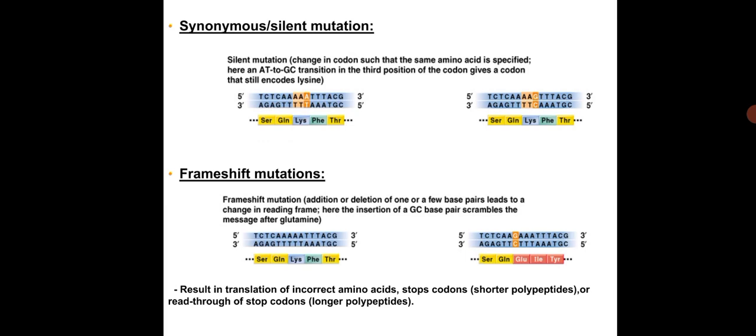In frameshift mutation, insertion or deletion of one or a few base pairs leads to a change in reading frame. For example, the insertion of a GC base pair scrambles the message after glutamine, leading to translation of incorrect amino acids, a stop codon generating a shorter polypeptide, or read-through of the stop codon generating a longer polypeptide. Such mutations alter the function of the final protein.